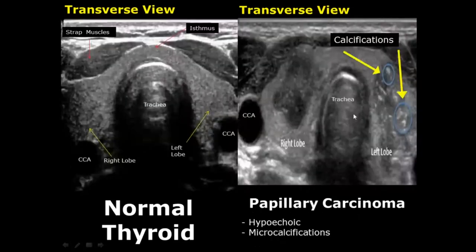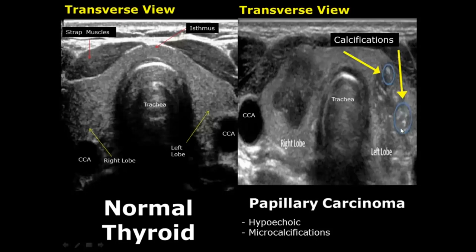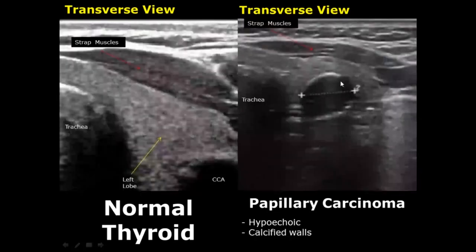Papillary carcinoma is a more common form of malignancy in the thyroid. It usually appears as hypoechoic lesions inside the thyroid and may also have large calcifications, but mostly they are hypoechoic lesions. In this image you can see a hypoechoic structure with calcified walls and some posterior acoustic shadowing. This can also be an appearance of papillary cancer.